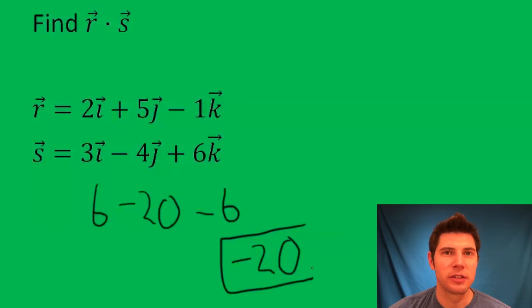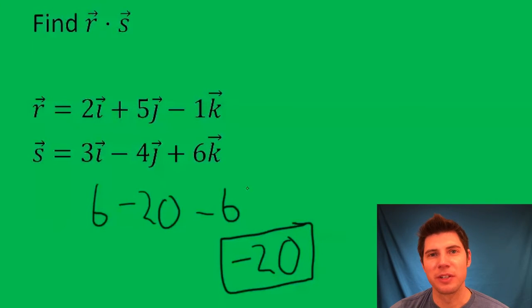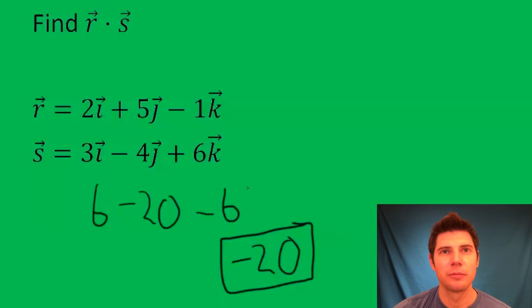That is the answer — it's the dot product of these two vectors, also known as the scalar product. I hope that makes sense. I'll talk to you guys soon. Bye.